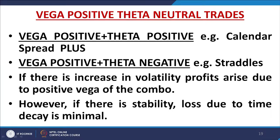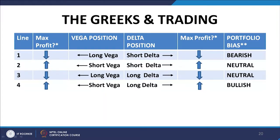How is this done? We have theta positive calendar spreads whereas straddles are theta negative. So if I have a combination of calendar spreads and straddles, both of them are vega positive, so I have a combined vega positive strategy. The theta positive and theta negative components more or less cancel between the two parts of the portfolio, whereas vega is added and makes the vega even more positive. That depends on our perception — if we feel that volatility is likely to increase, we can use this strategy with benefit.